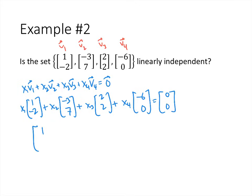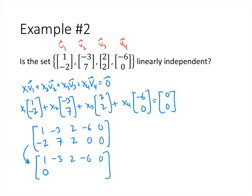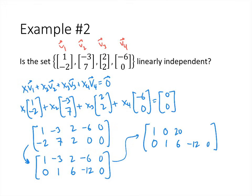We've got a 1 in the first row, first column. We take the first row, multiply by 2, and add to the second row: we get (1, 0), and -3 times 2 plus 7 is 1, 2 times 2 plus 2 is 6, -6 times 2 is -12, and a 0. To get reduced echelon form, we multiply the second row by 3 and add to the first row. After this, every row has a pivot, and there's nothing else we can do. This is in row-reduced echelon form.